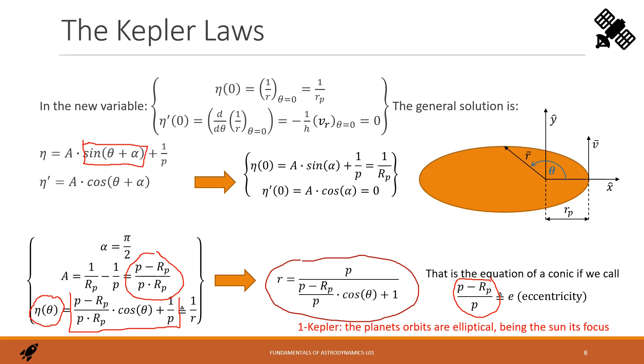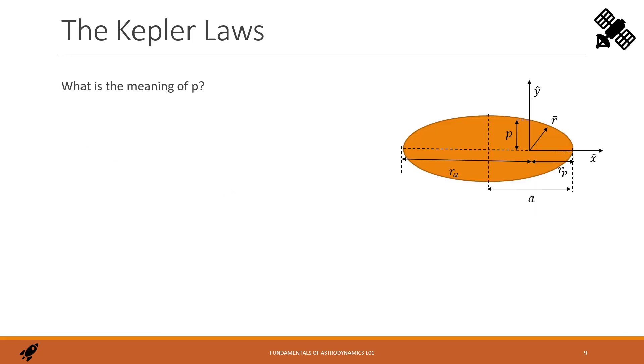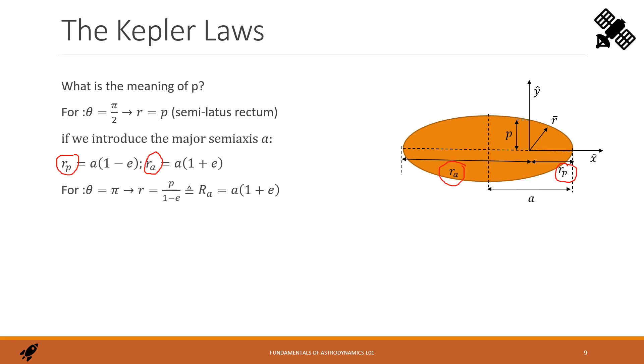The planet's orbits are elliptical being the sun its focus. What is the meaning of p? For theta equals pi half, r is equal to p. p we call the semilatus rectum. By introducing the major semi-axis a, the radius of the periapsis is a times e minus 1. And the radius of the apoapsis is a times e plus 1. So for theta equals pi, that is the position of the apoapsis, we get r equals p over 1 minus e. And if we combine the two expressions, we find the value of p being a times 1 minus e squared.